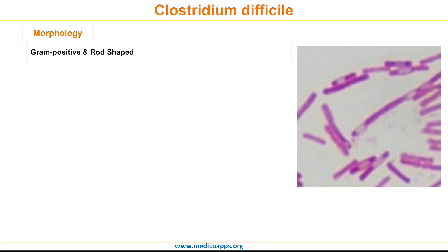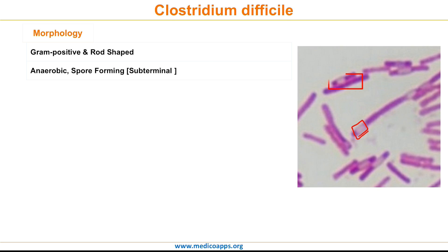Clostridium difficile is a gram-positive, rod-shaped bacteria. It is anaerobic and spore-forming, and the important point here is that the spore formed by Clostridium is subterminal. Here in the diagram you can see this light portion, which represents the subterminal spores of the bacteria.